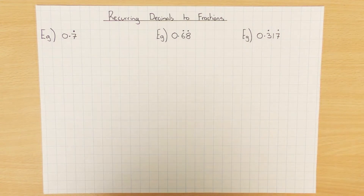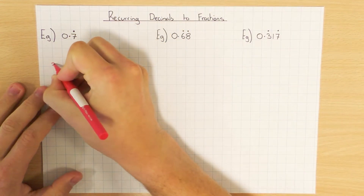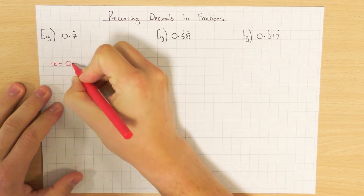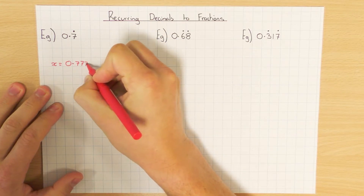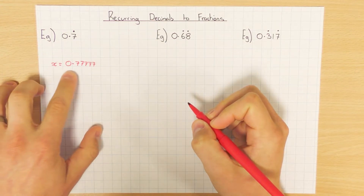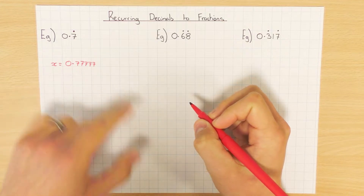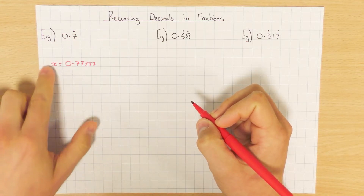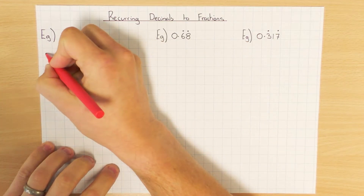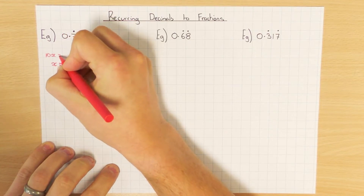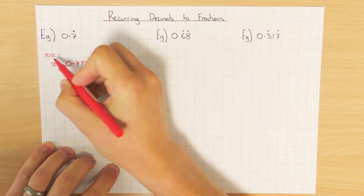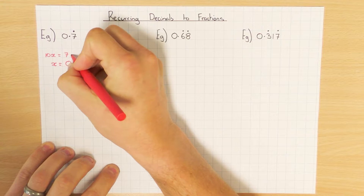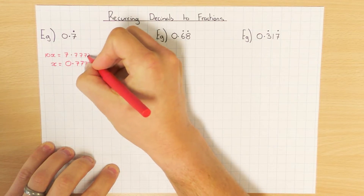So how do we do that? The first thing we do is we say let's call x our recurring decimal. So x just equals our recurring decimal 0.7777777. Now because one number is reoccurring, I'm going to times this by 10 and write it above. So I times this whole thing by 10 — everything's going to shift to the left, so it's just going to be 7.77777.